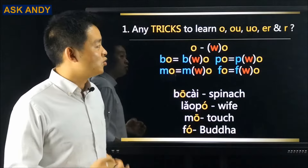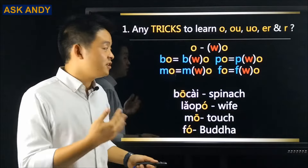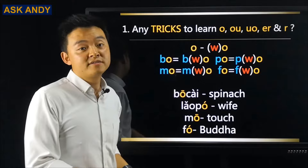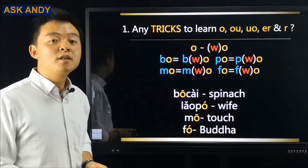For question one — any tricks to learn O, OU, UO, ER, and R — I categorize them into three groups. Group one is the letter O. The trick is to make an extra W there, making it into WO. When O goes after B, P, M, and F, we add an extra W, so it becomes BO, PO, MO, FO. Let's see some examples.